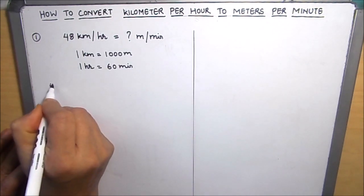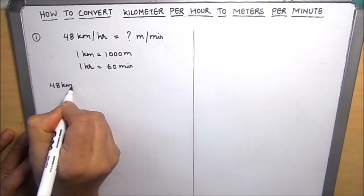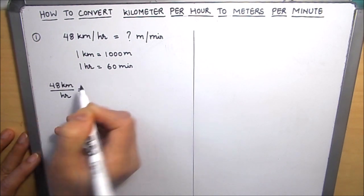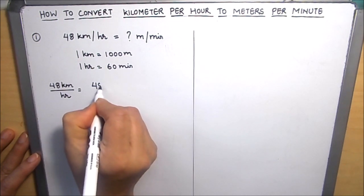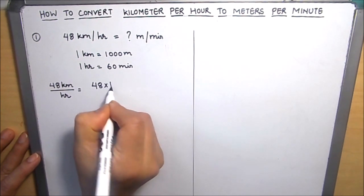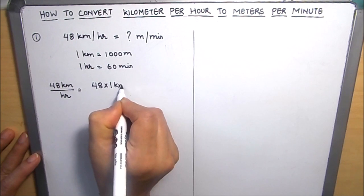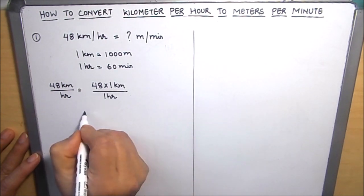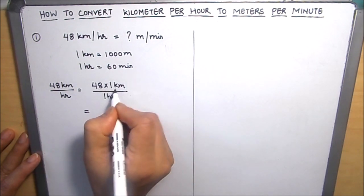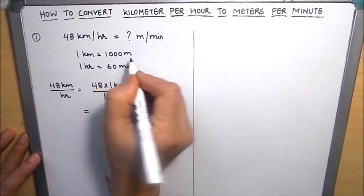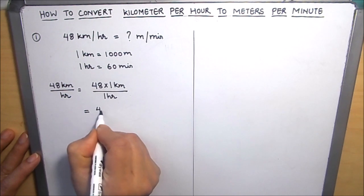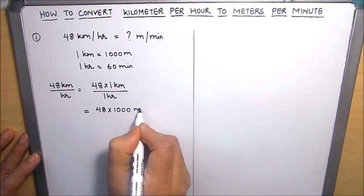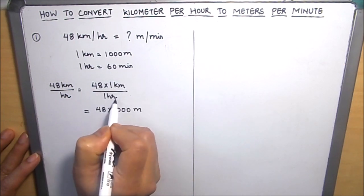So 48 kilometer per hour we can write as 48 kilometer over hour, which is 48 times 1 kilometer over 1 hour. Now in place of 1 kilometer, we are going to write in terms of meters, which is 1000 meters.